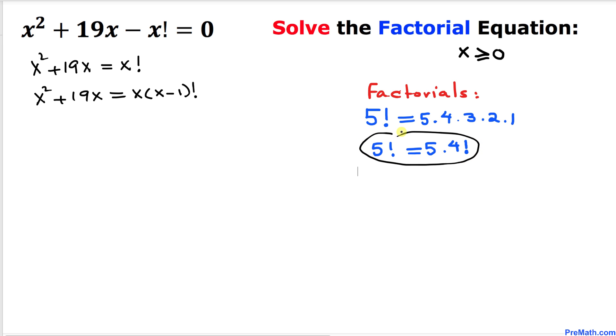Now let's divide each term by x to make things simple. We get x + 19 = (x-1)! on the right-hand side.